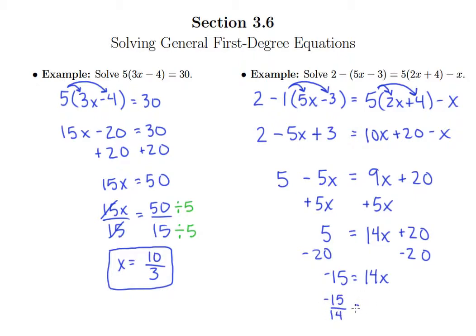We can divide both sides by 14 to isolate x. So our answer here is x equals negative 15 fourteenths because that is a reduced fraction.